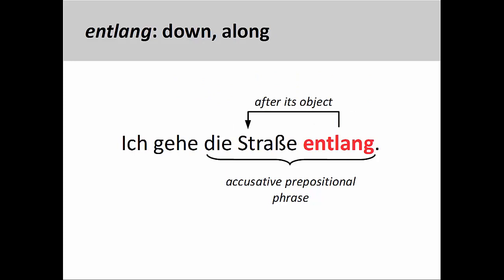Entlang, meaning 'down' or 'along,' is an unusual preposition in that it comes after its object. For example, 'Ich gehe die Straße entlang' — I am going down the street, or I am going along the street. In some dialects, you may see this preposition with a dative object or used in conjunction with a dative two-way preposition. We will discuss two-way prepositions in a later presentation.